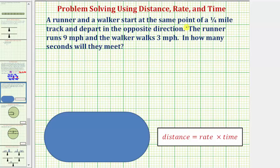A runner and a walker start at the same point on a quarter mile or one-fourth mile track and depart in the opposite direction. So let's say both the runner and walker start here.